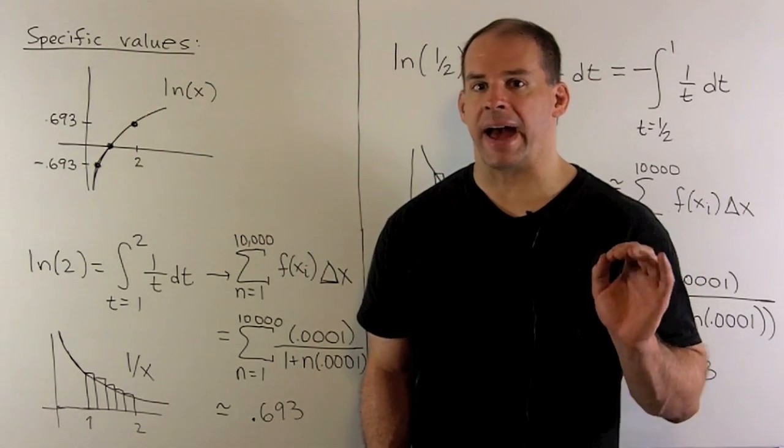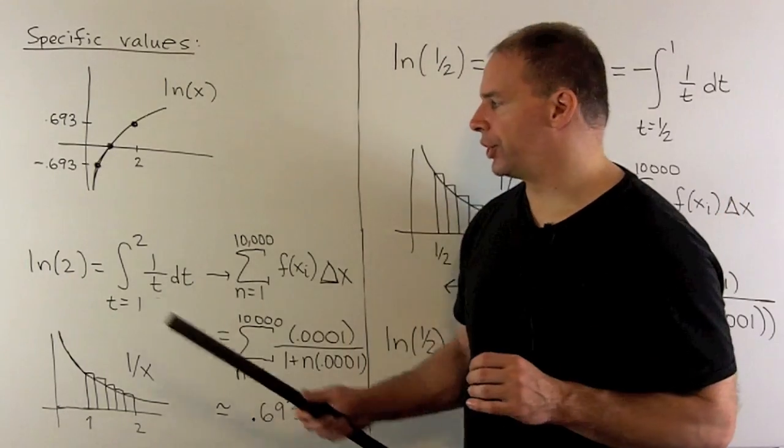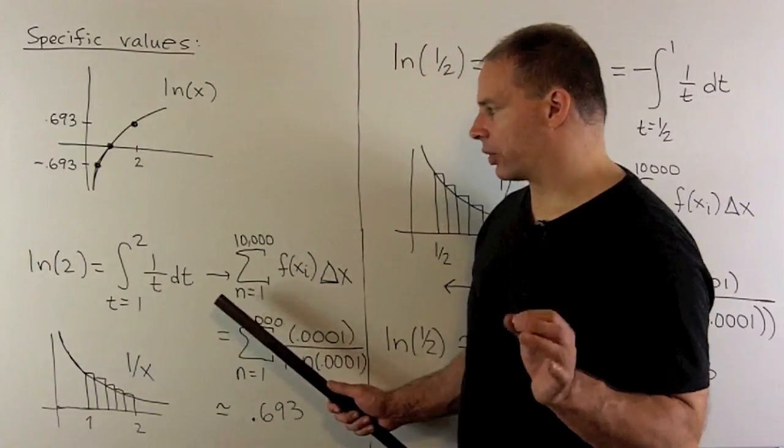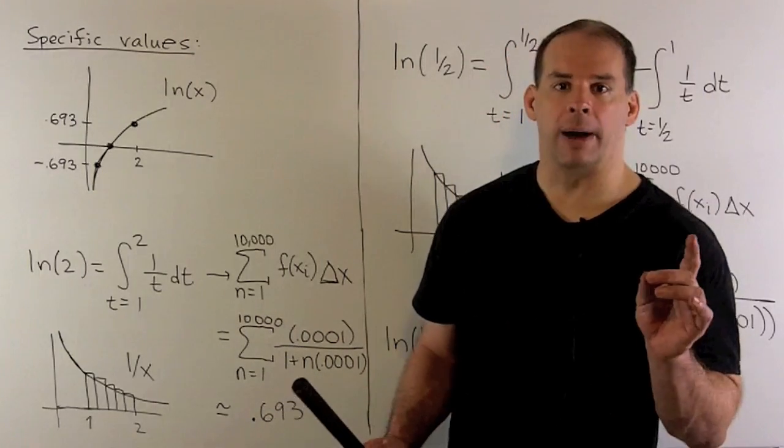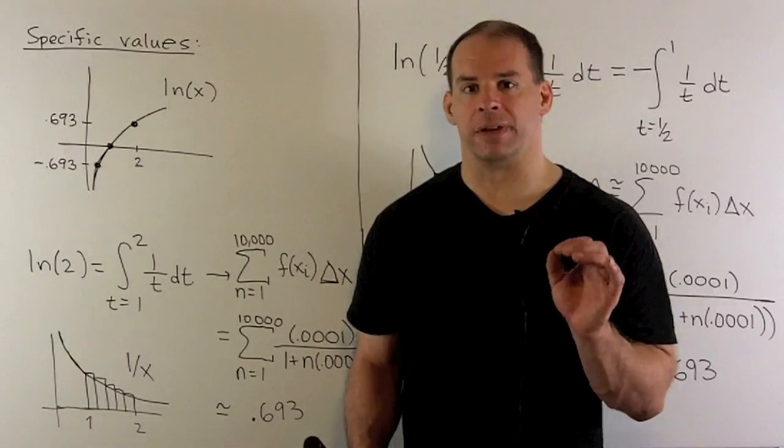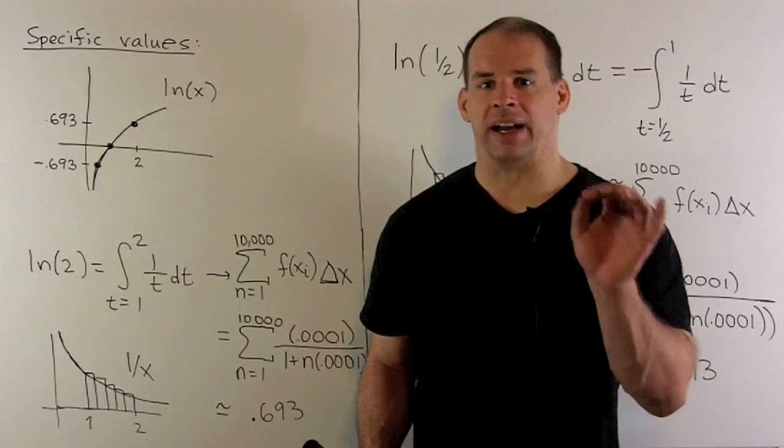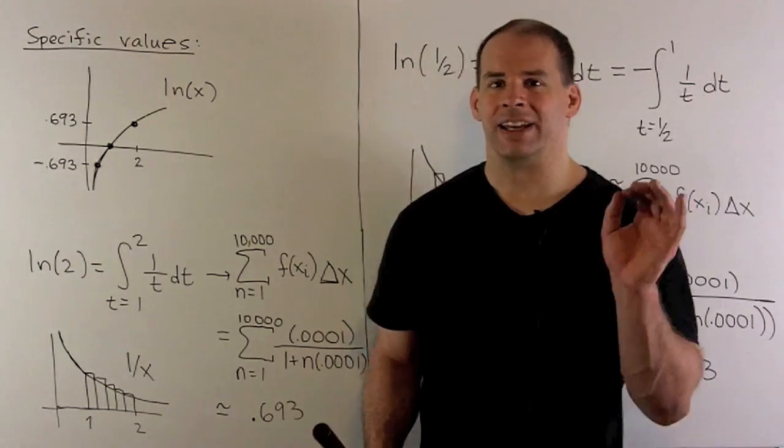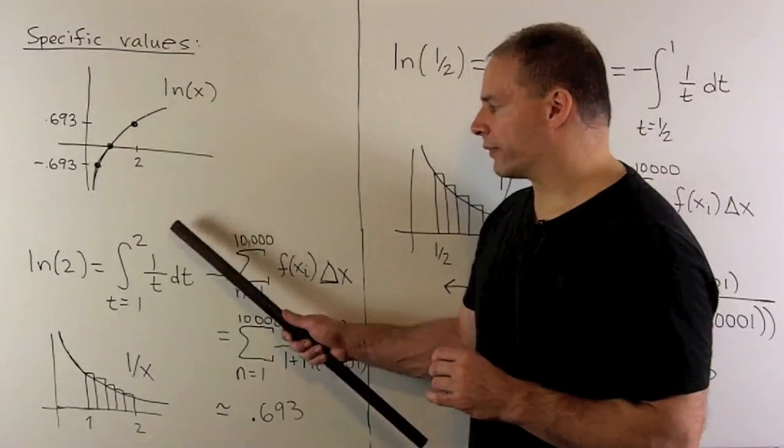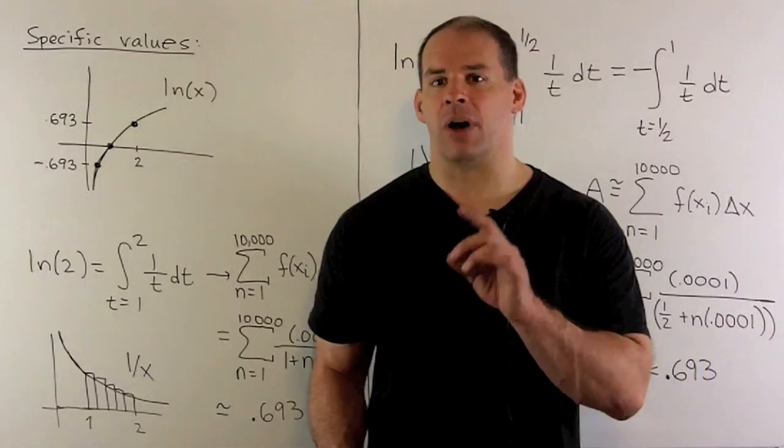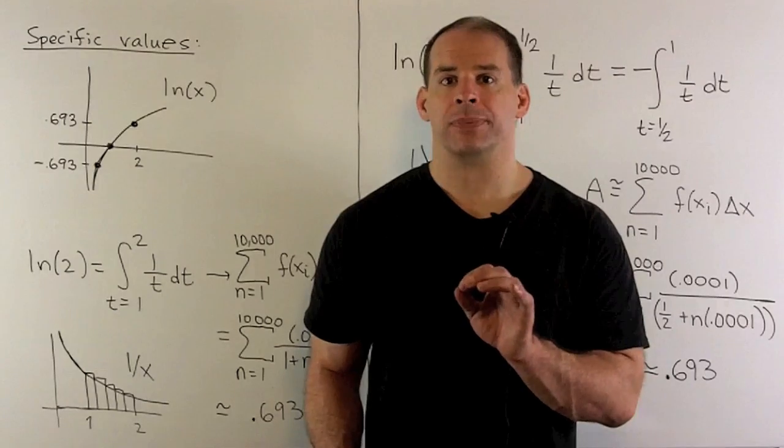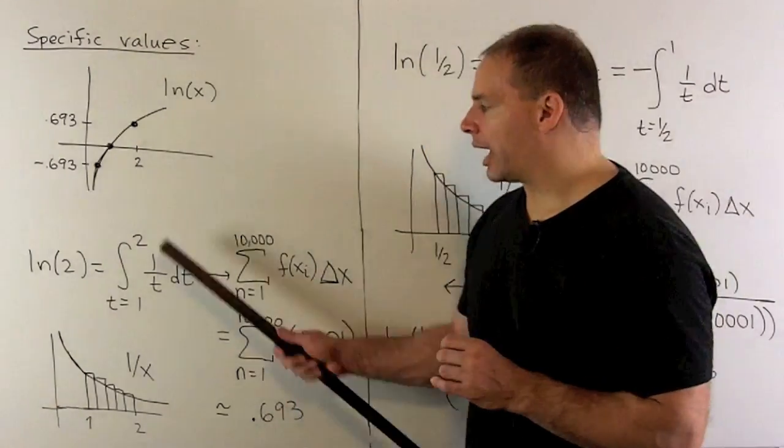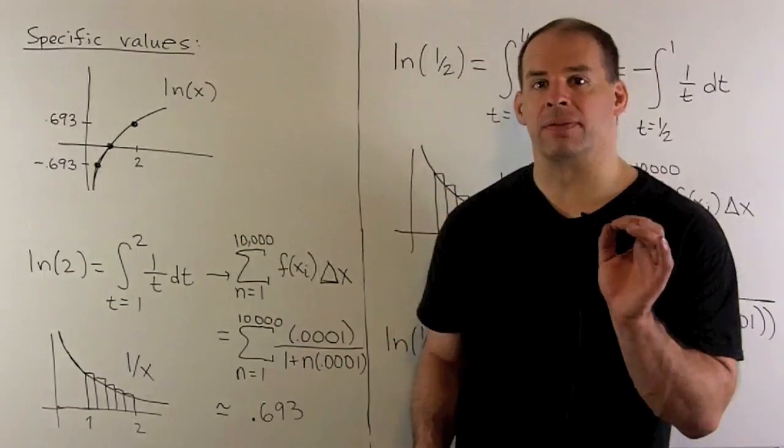We have the graph of natural log. How do we get specific values? So, if I want natural log of 2, I put 2 in for x, then I have to compute this definite integral. Now, we don't want to use the first fundamental theorem of calculus. That says, find an antiderivative, evaluate your endpoints, take the difference. Here, the antiderivative of 1 over t is going to be natural log, and that's the function I want to get information about. So, that's a step in the wrong direction.